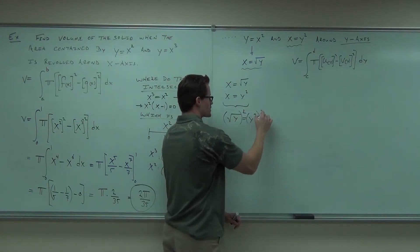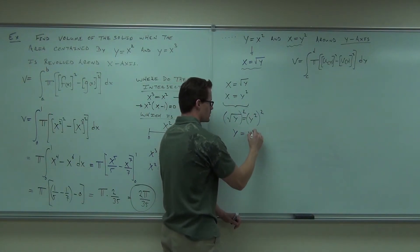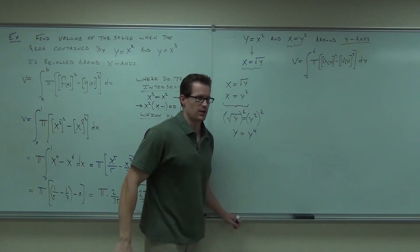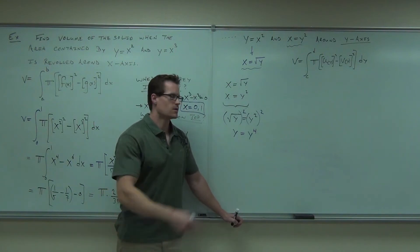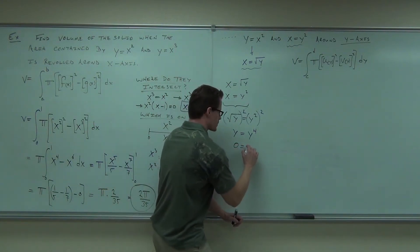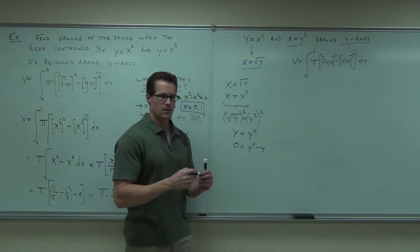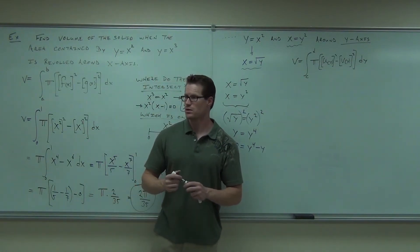So square both sides. Notice you're going to get y equals... Now say what you said, Alan. What do you do next? You bring those all to the side. There you go. Zero equals y to the fourth minus y. Now what would you do? Factor. Sure.